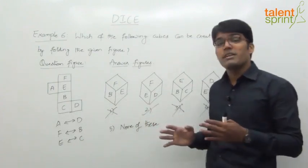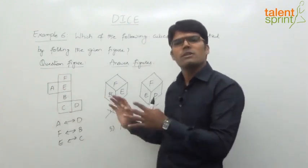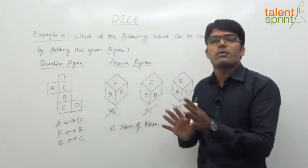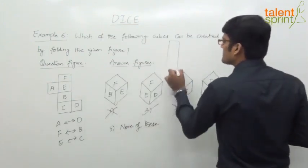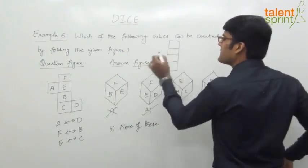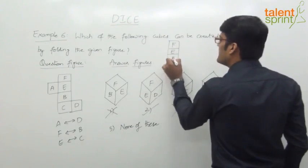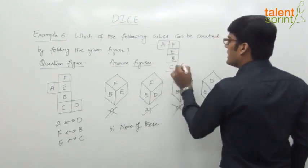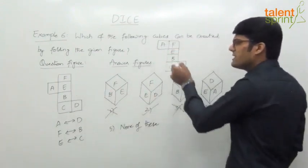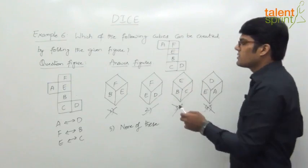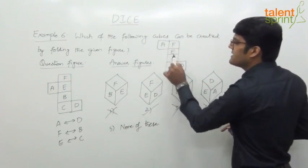Before closing this topic, let me show the different forms in which the open figure can be given. In all forms, it is easy to identify the opposite faces. For example, one form has faces F, E, B, C in a line with A and D as extensions — A and D are opposite, F and B are opposite, E and C are opposite. The same opposite relationships hold in another form where the layout is slightly different.